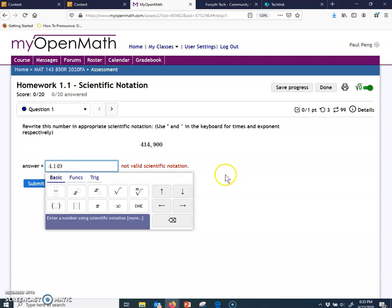So first type that number and then times is shift number 8, the star. The second is 10 raised to a power. So times 10 and then going to the math editor, you can see the math editor. Can you see, raise to a power. Click here.